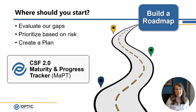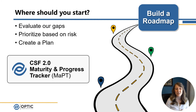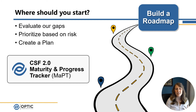Once we understand these gaps and evaluate their significance based on the risk they bring, we can start to prioritize what we need to address first and create a plan. One way I wanted to highlight is a new free tool that Optic Cyber Solutions has created to help measure your capabilities and report out both your gaps as well as your progress as you start implementing the change. We tailored our maturity progress tracker to align to the NIST Cybersecurity Framework 2.0 to help simplify the process of figuring out where you stand against the CSF updates and have a simple mechanism for tracking progress over time. I'll link the tool below in the video notes, so be sure to check it out.